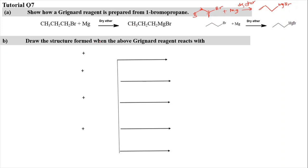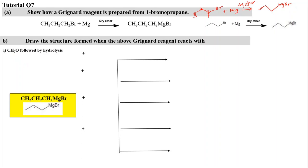For tutorial question 7, we show how a Grignard reagent is prepared from 1-bromopropane. 1-Bromopropane is drawn as a 3-carbon chain (C1, C2, C3) with bromine at carbon 1. To prepare the Grignard reagent, it reacts with magnesium metal in dry ether as solvent, producing the Grignard reagent CH₃CH₂CH₂MgBr. You can draw it in skeleton or condensed structure form.